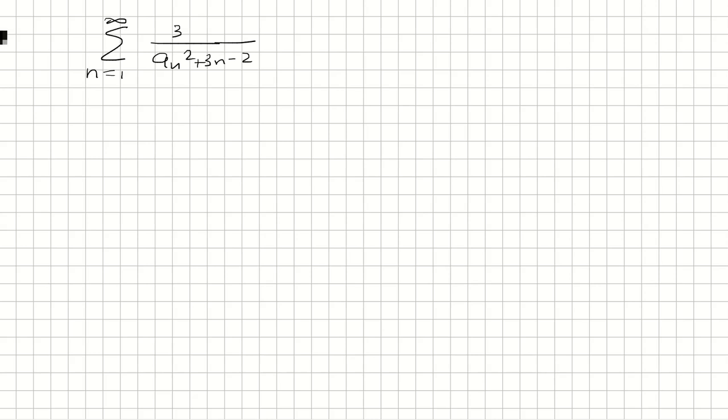We want to convert this series to a telescoping series. So let's first factor out a 3 and then we'll factor the denominator. The denominator factors into 3n minus 1 times 3n plus 2.